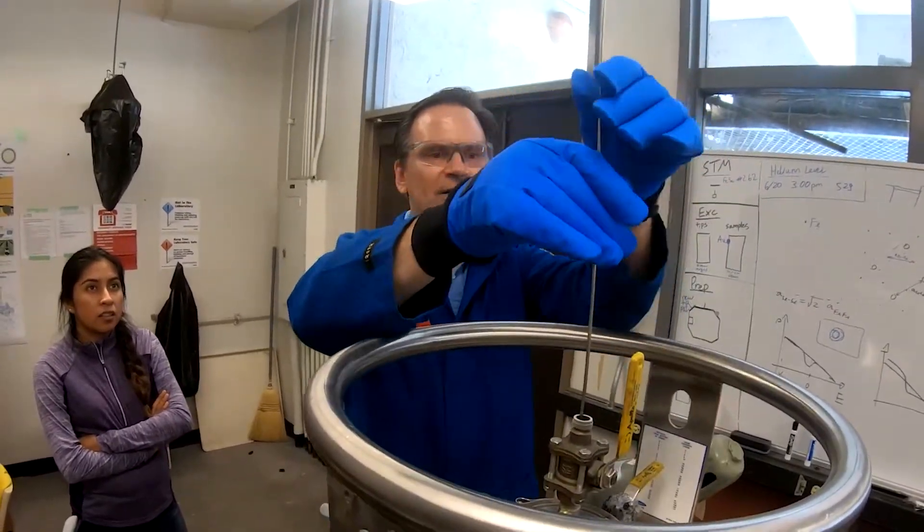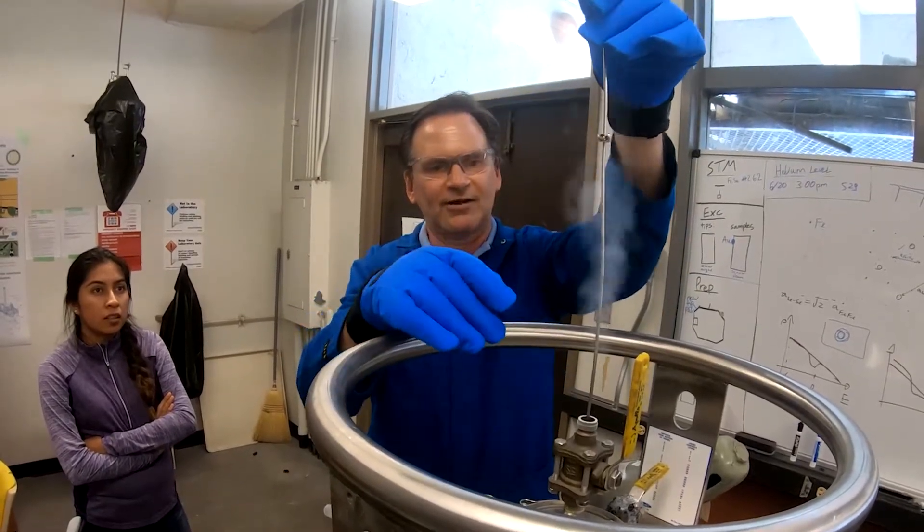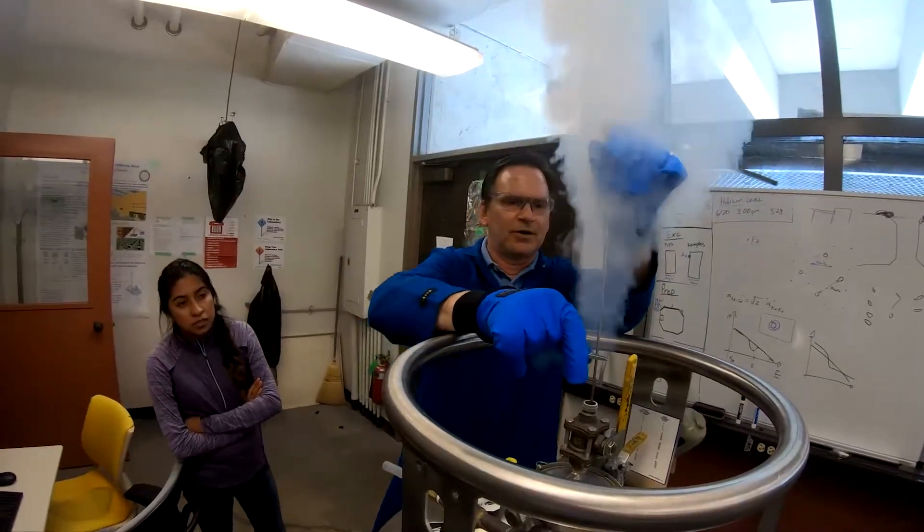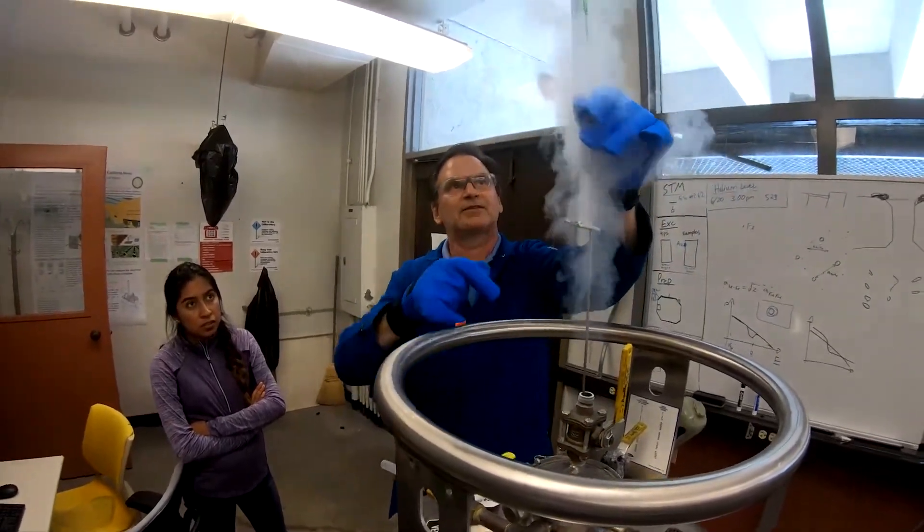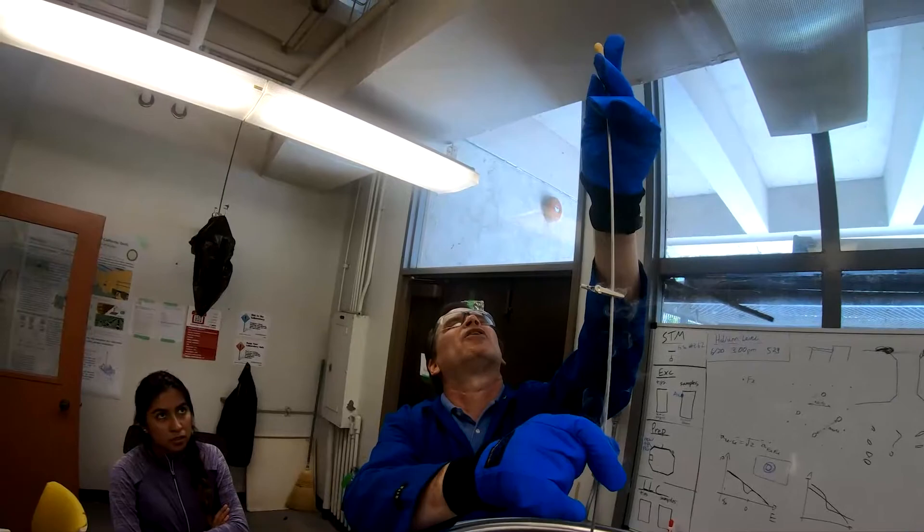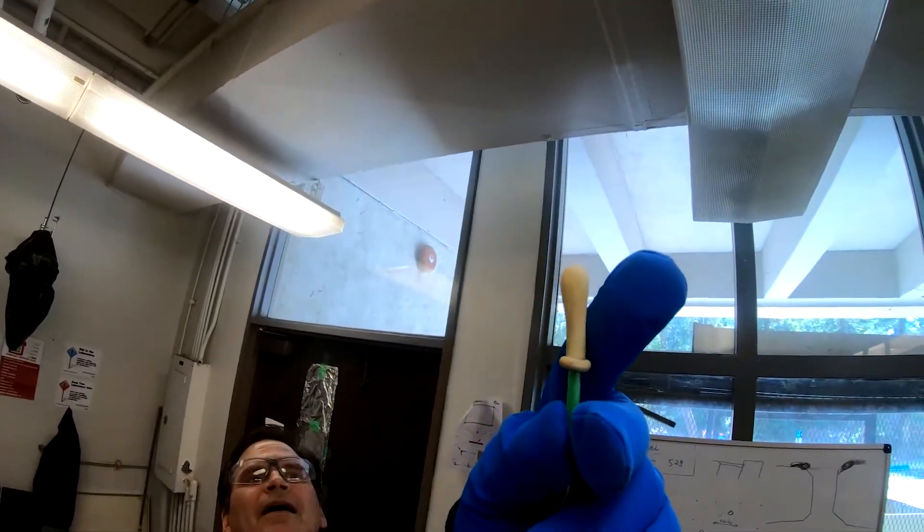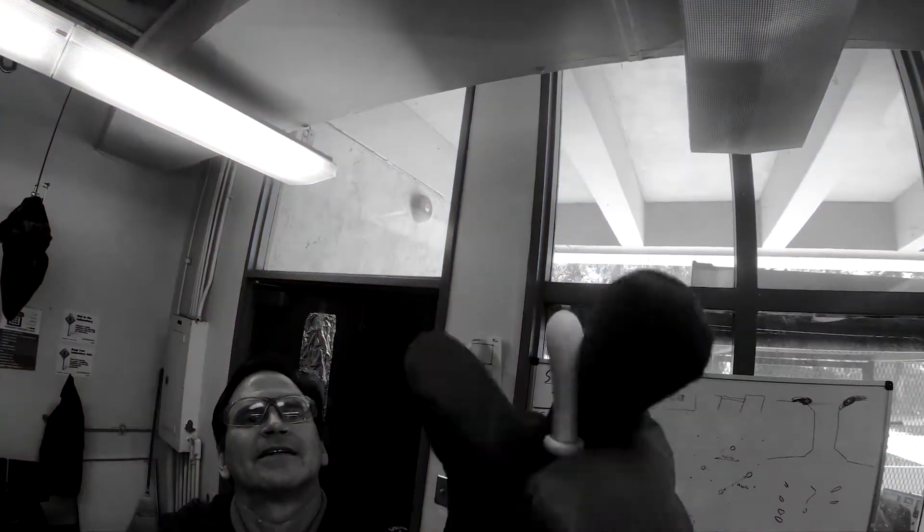So we're going to basically slowly lower this in. We're going to now start to boil up some gas. There's the bottom of the dewar. I'm going to mark the position of the bottom of the dewar. Now I'm going to start to pull it up. Check that bulb. It's going to change, just change frequency.